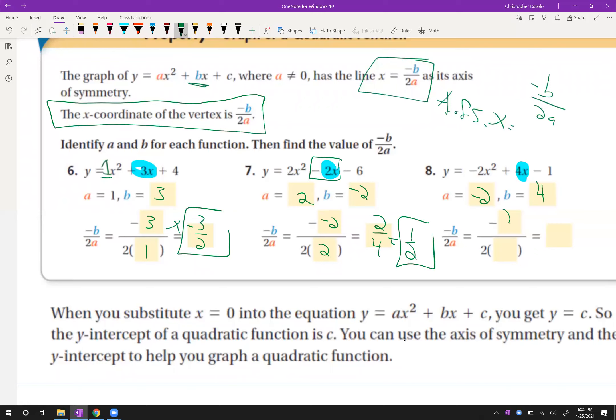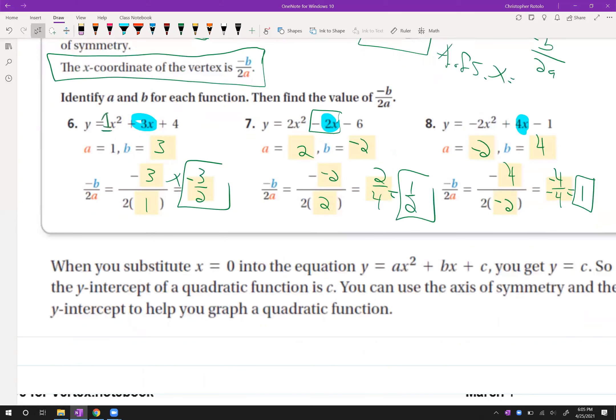And the A value is negative 2. The B value is 4. So negative 4 over negative 2 times, or 2 times negative 2. So I get negative 4 over negative 4, which is 1.